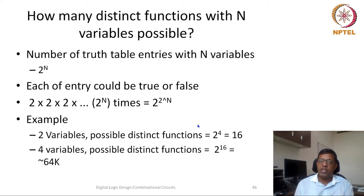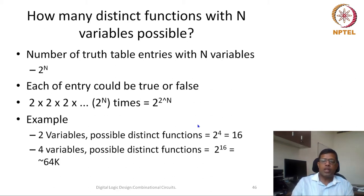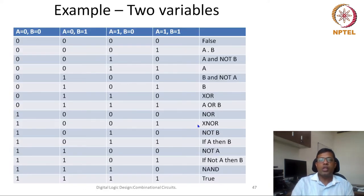But my mind is still not clear on how it is possible that there would be 16 distinct functions just with two variables. Let us see in detail with an example. What I do is I will try to write all possible truth tables. How do I write all the possible truth tables? Essentially, how many entries would be there if the number of variables are 2? Truth table entries would be 4.